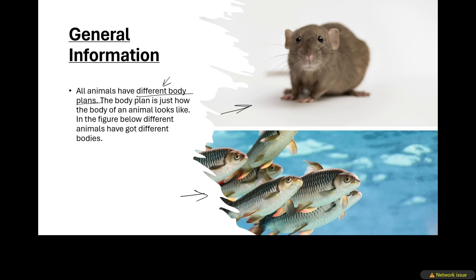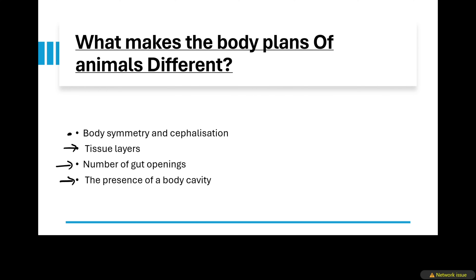What makes these bodies different from one another are the following factors: the body symmetry of the organism, cephalization, the tissue layers, the number of gut openings, as well as the presence of a body cavity. In this video we're just going to do body symmetry, cephalization, as well as the tissue layers. We'll do more in our next videos.